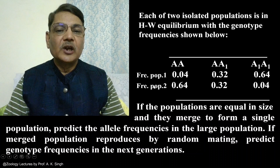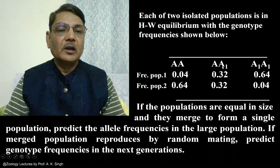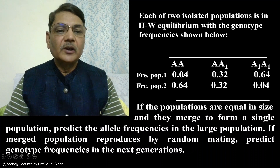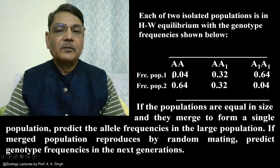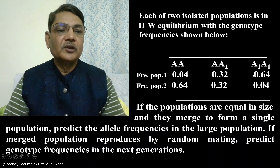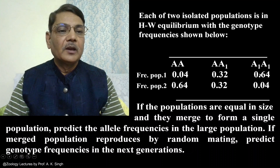The frequency of these three genotypes in population 2 is 0.64 for AA, 0.32 for heterozygote, and A1A1 is 0.04. If you see carefully, the heterozygotes are completely equal in frequency in both populations. Whereas in population 1 the frequency of AA is 4%, in population 2 it is 64%. The situation is just opposite for A1A1 genotype: in population 1 its frequency is 64%, whereas it is only 4% for population 2.